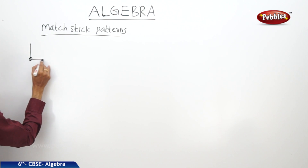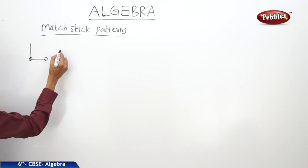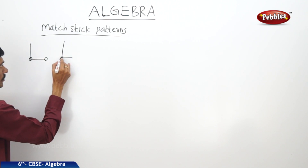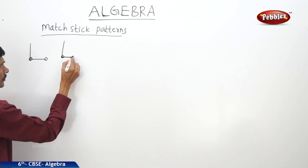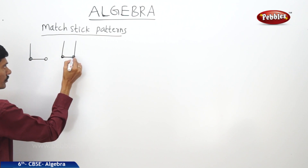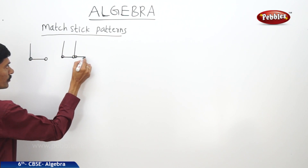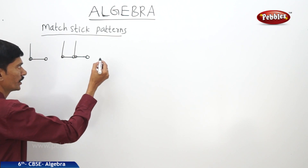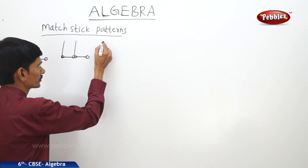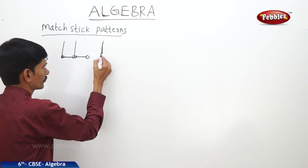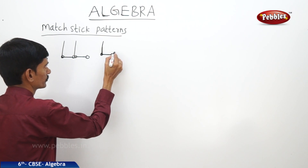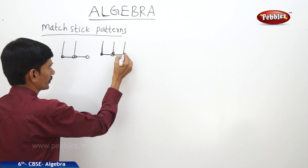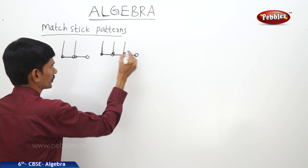To make one letter L, we need one and two matchsticks — so two matchsticks. To make two letters L, we need one, two, three, four matchsticks. To make three letters L, we need one, two, three, four, five, six matchsticks.